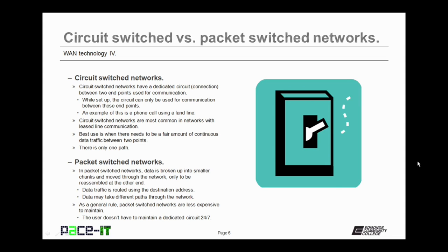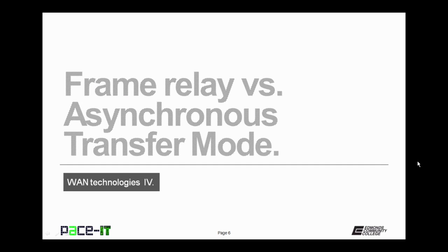On the other hand, in packet-switched networks, data is broken up into smaller chunks and moved through the network, only to be reassembled at the other end. The data is routed using the destination address, and the data may take different paths through the network. As a general rule, packet-switched networks are less expensive to maintain, because the user doesn't have to maintain a dedicated circuit 24-7 — they're only paying for what they're using.